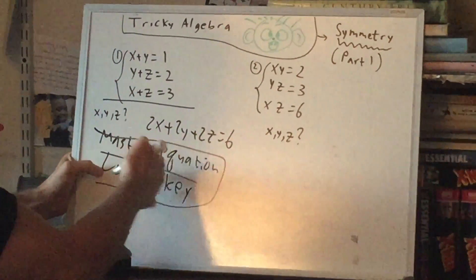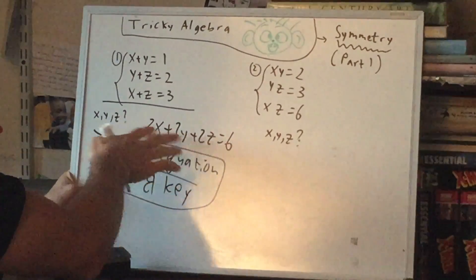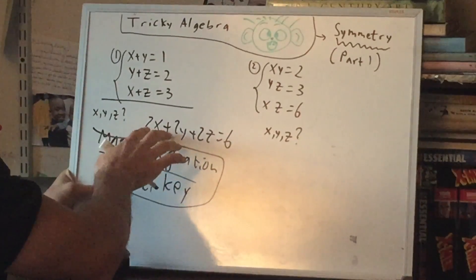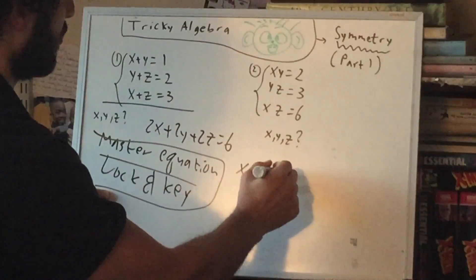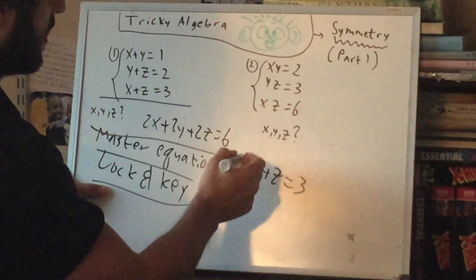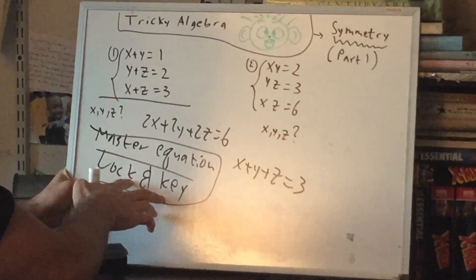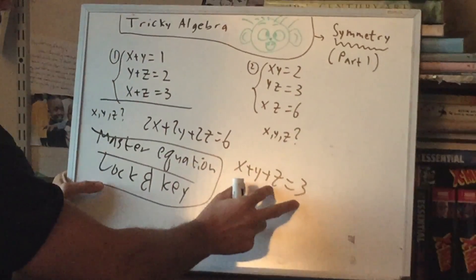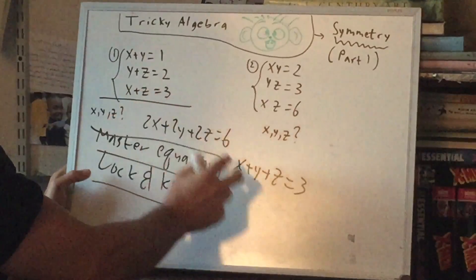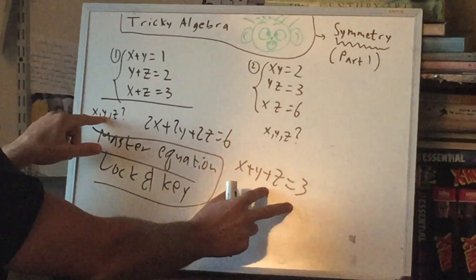These aren't technical terms, these are just my terms. So why is this so useful for us? Because now we can divide everything by 2, and we can get x plus y plus z equals 3. Just like a lock and key, this is our master equation. And if we combine this with any one of these, we'll pop out whatever we want to know.